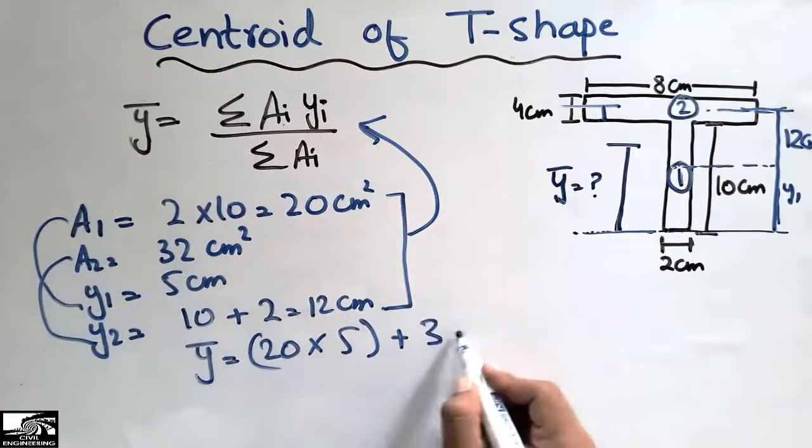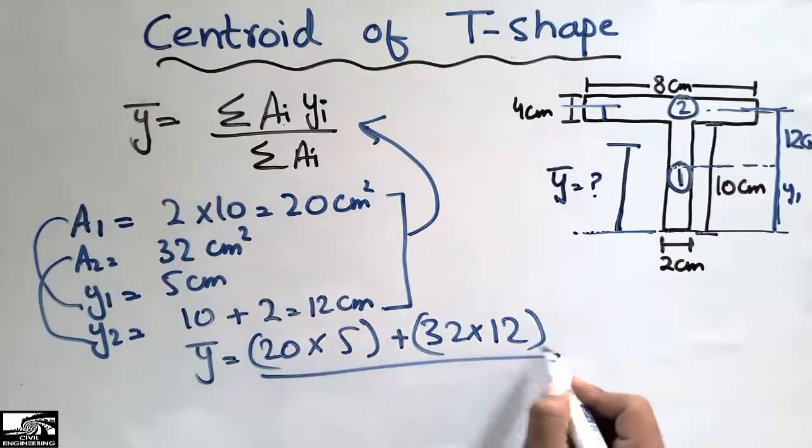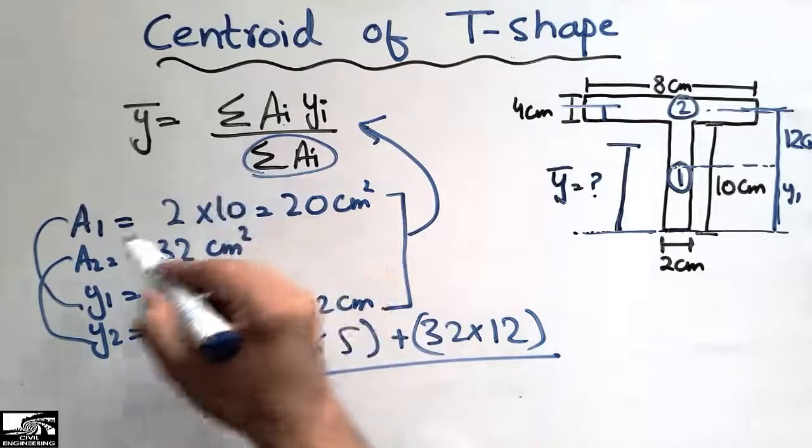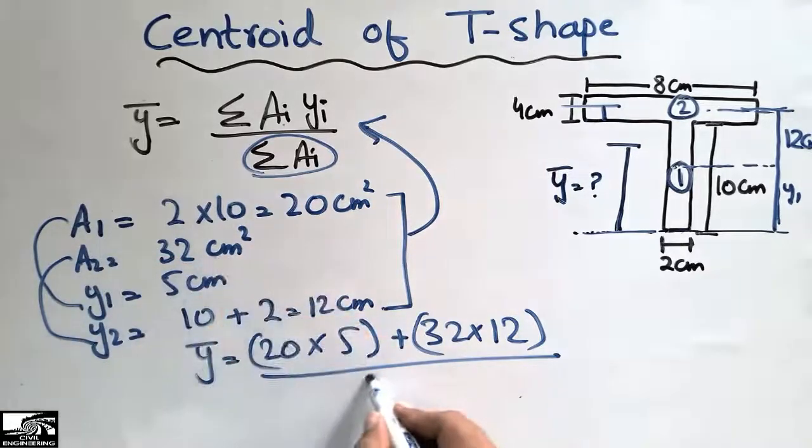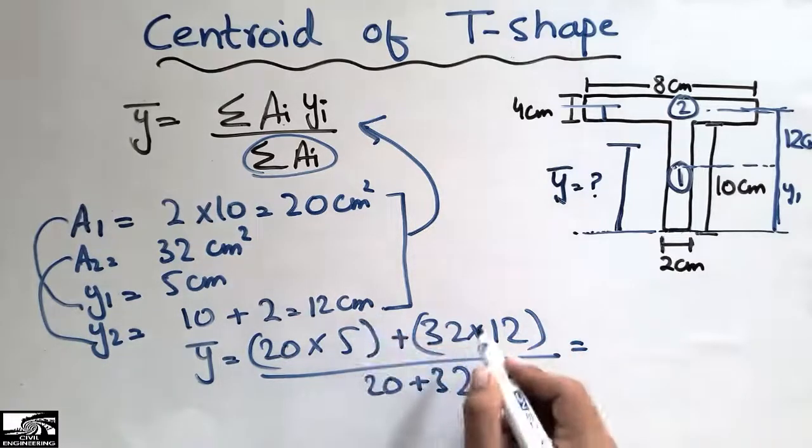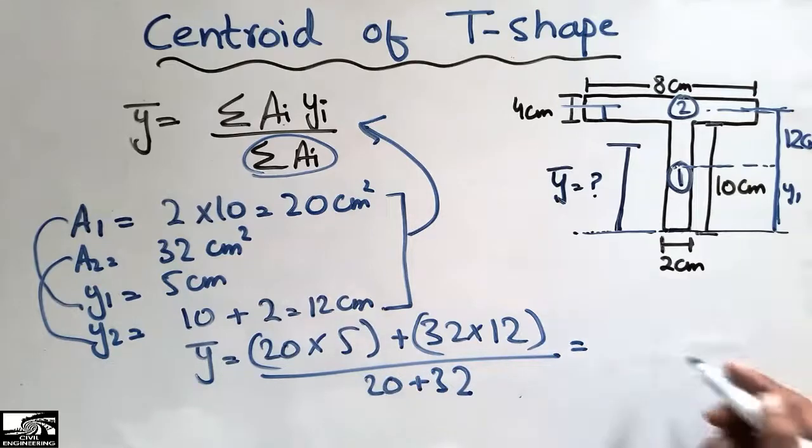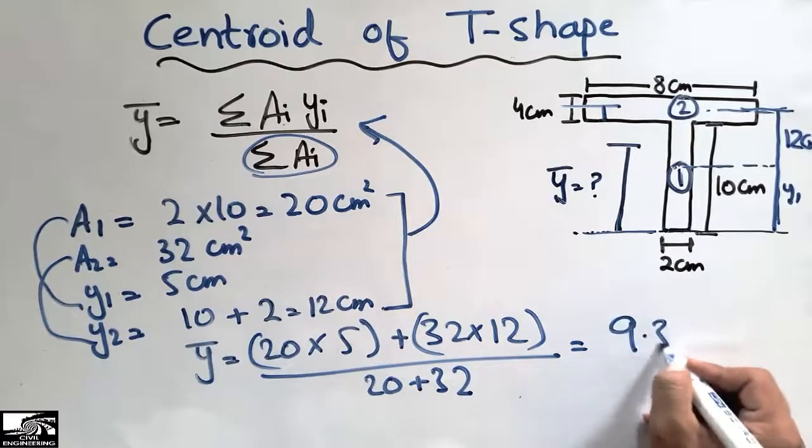32 into 12, then dividing by the summation of areas. So the two areas are A1, 20 plus 32. By solving these values I will get my centroid which is equal to 9.30 centimeter.